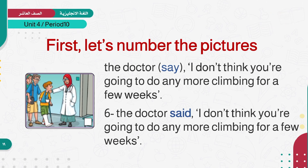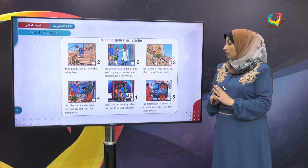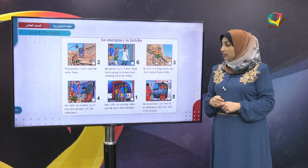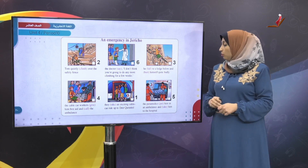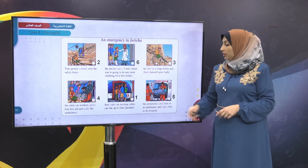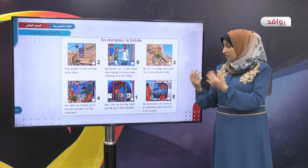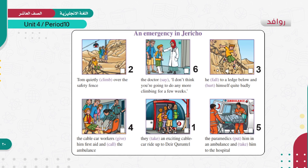Now let's review the full order. Number 1: the cable car ride. Number 2: Tom quietly climbed. Number 3: he fell to a ledge below. Number 4: the cable car workers gave first aid. Number 5: the paramedics put him in an ambulance. Number 6: the doctor said. That's the full picture order.